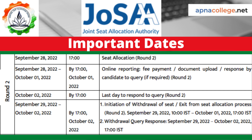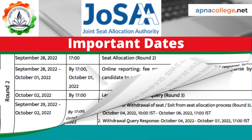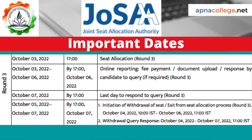On September 28, 2022 at 5 PM, the Round 2 seat allocation result will be displayed. Candidates need to do the online reporting comprising fee payment, document upload, and response to queries. October 2, 2022 at 5 PM is the last deadline to respond to queries raised in Round 2. From September 29 till October 2, 2022 at 5 PM, if any candidate wants to withdraw the seat or exit from the seat allocation process, they can exercise that choice. On October 3, 2022 at 5 PM, the JOSA 2022 Round 3 seat allocation result will be displayed.